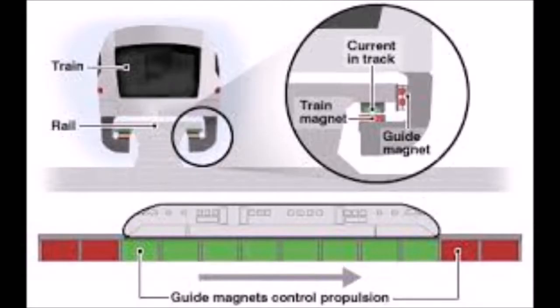One set of electromagnets will be on the bottom of the train, while the other set will be on the tracks. Since all these magnets will have the same polarity, they will repel, which causes the levitation of the train.